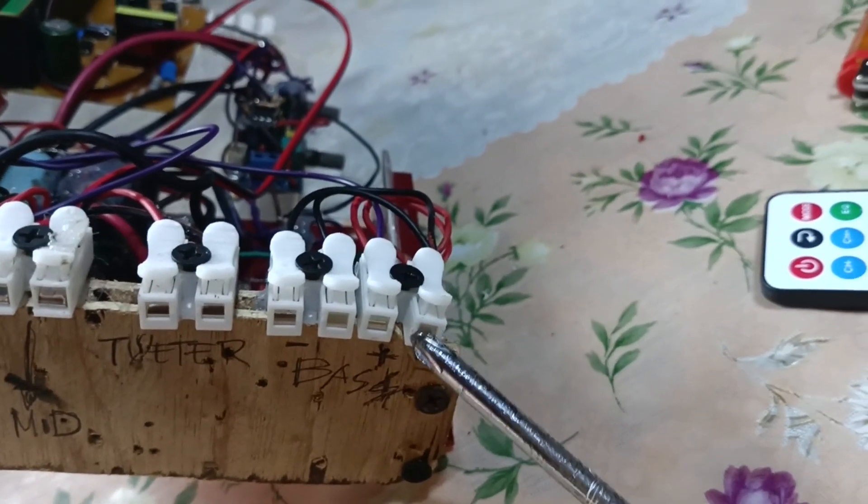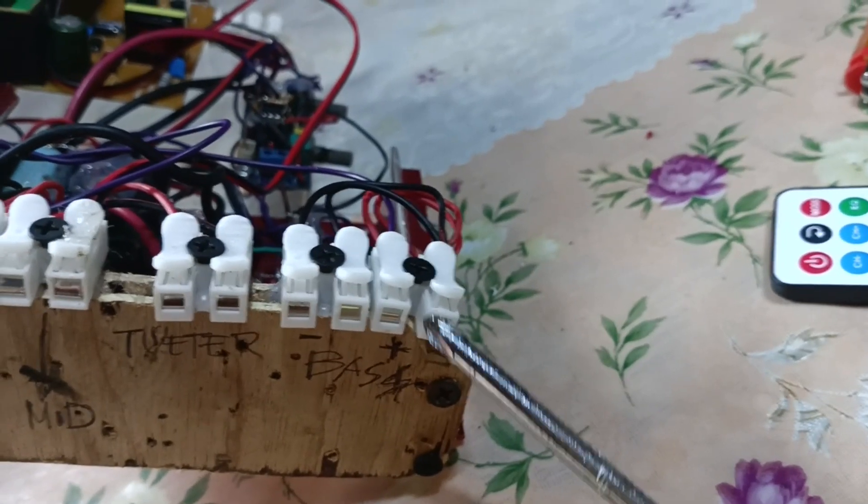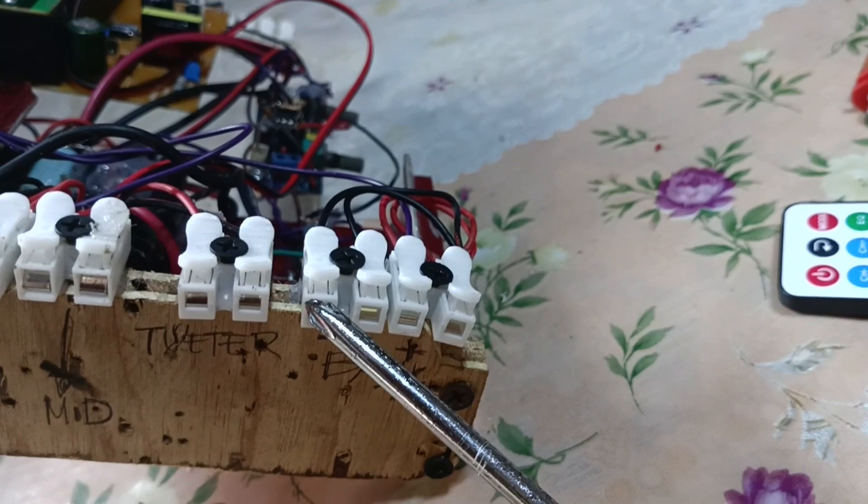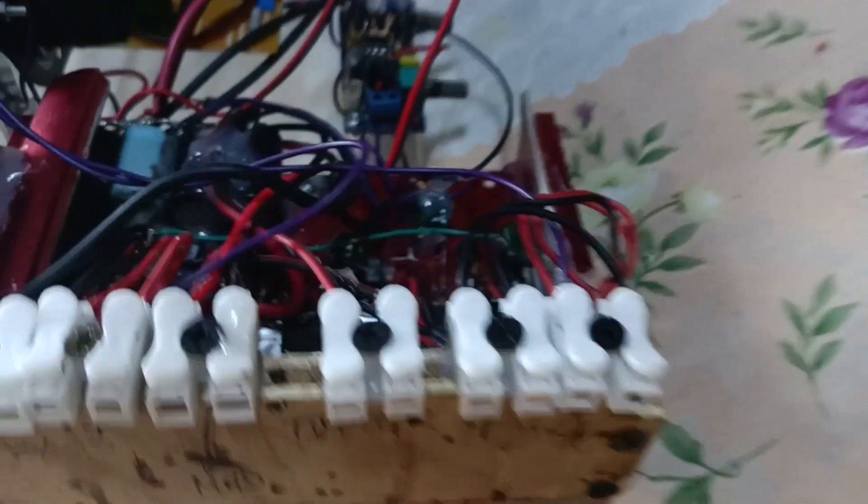Makikita nyo dyan, parang yung targa DBC ay apat ang connection. Yung dalawang positive niya ikakabit ko rito, at dalawang negative niya ikakabit ko rin dito.